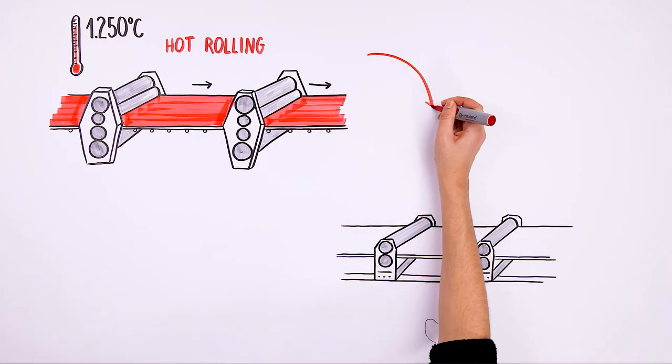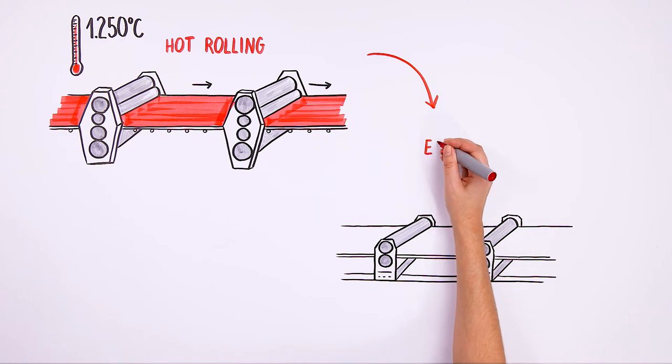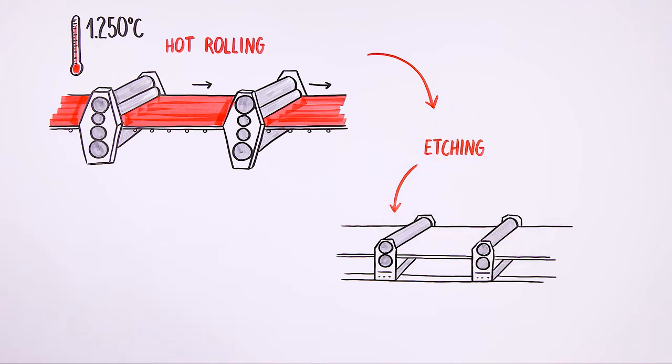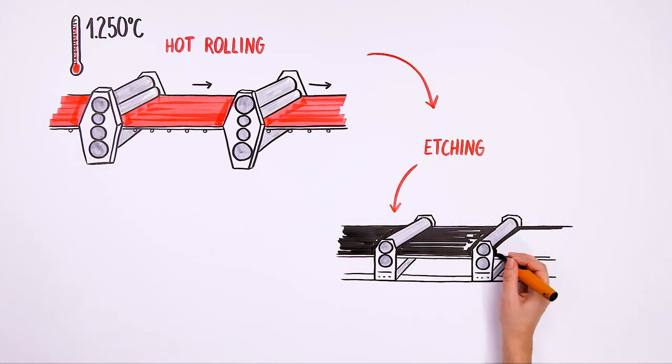This is how the finished steel coils are made, but some applications require further processing. The first process is etching, i.e. removal of iron oxide by means of hydrochloric acid.